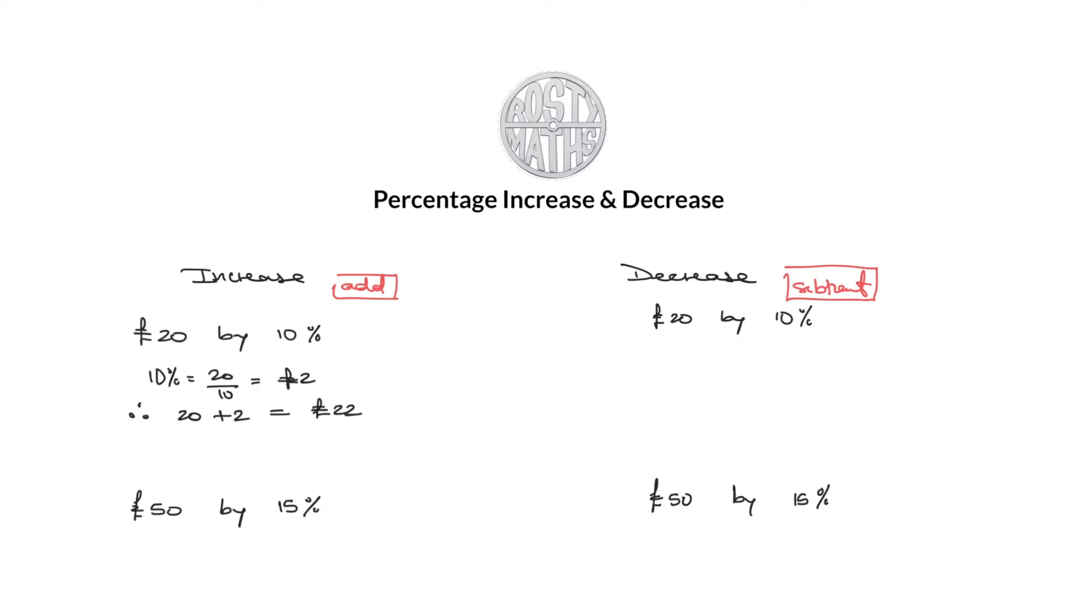So now we need to increase £50 by 15%. So that means I need to find 15% of £50 and then add that on. Let's change color and just blitz through this now.